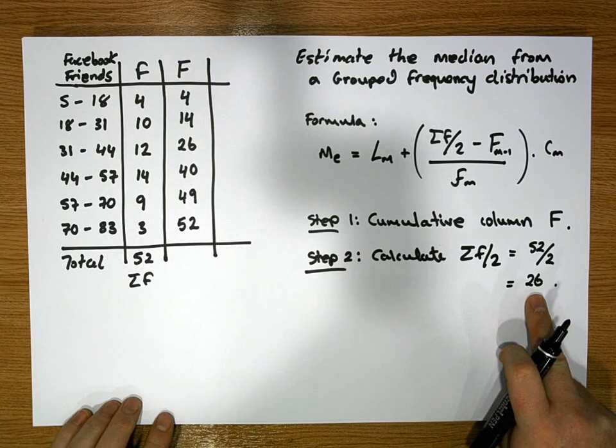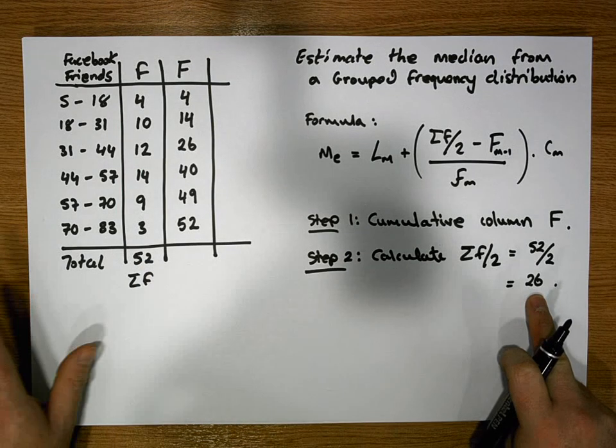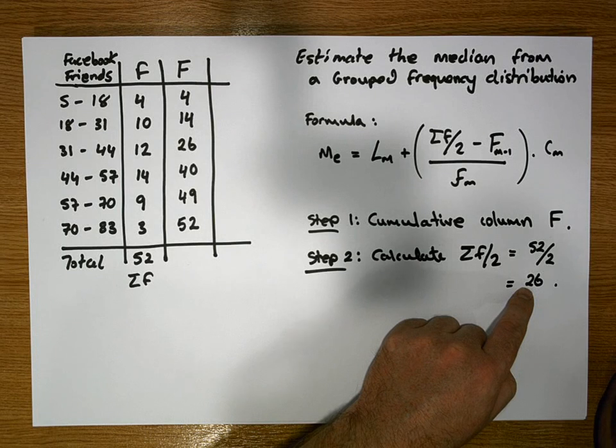So what we now know is that the median should have 26 values less than it and 26 values greater than it.